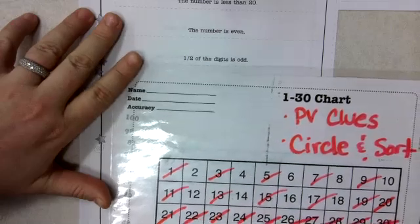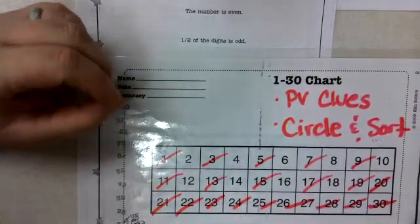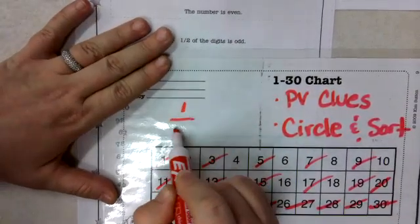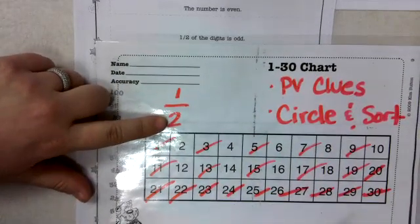After that, half of the digits are odd. So when we see one half, that means one digit in a two-digit number is odd.